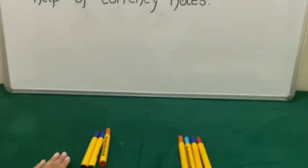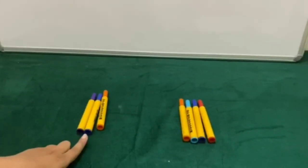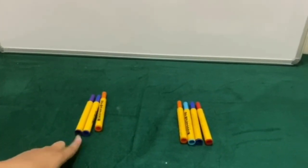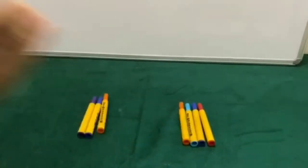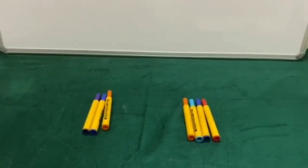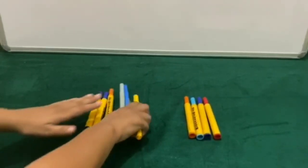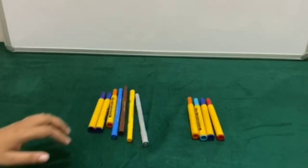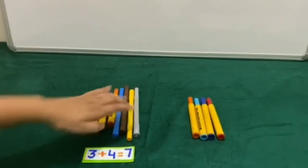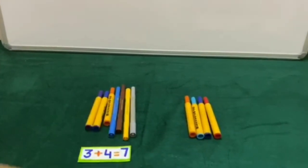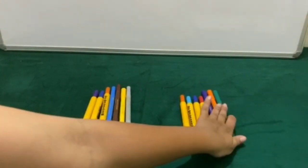Here we have some sketch pens — 3 sketch pens on this side and 4 sketch pens on this side. If we add 4 sketch pens here, it will be 3 plus 4 is equal to 7.